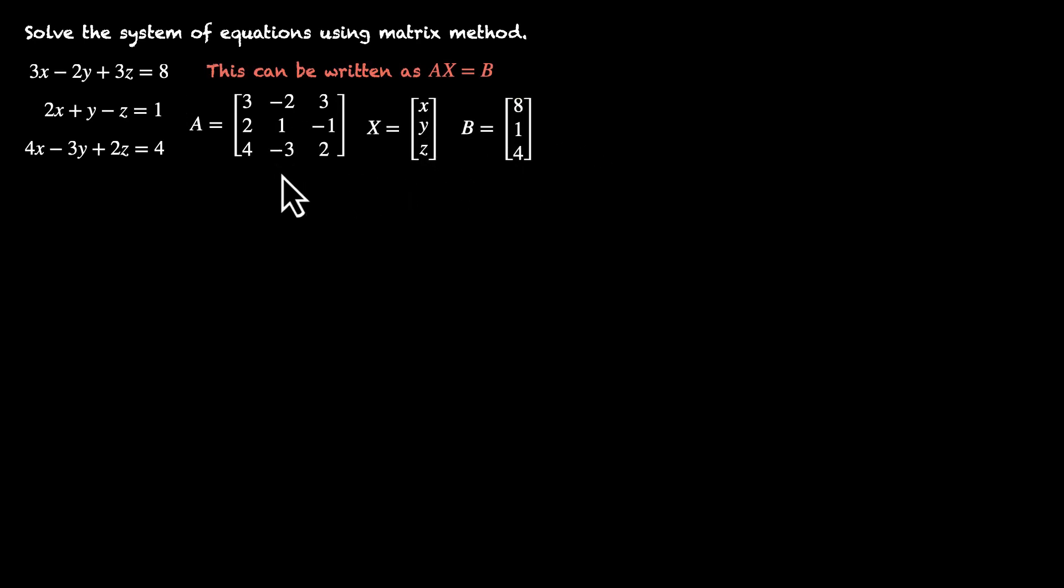You can check this for yourself. If you multiply A with X, this is a 3 by 3, this is a 3 by 1. We have 3X - 2Y + 3Z. That's the first element. And if that's equal to B, this means 3X - 2Y + 3Z = 8. We can see the same is true for the other two. So we've rewritten this same thing in terms of matrices.